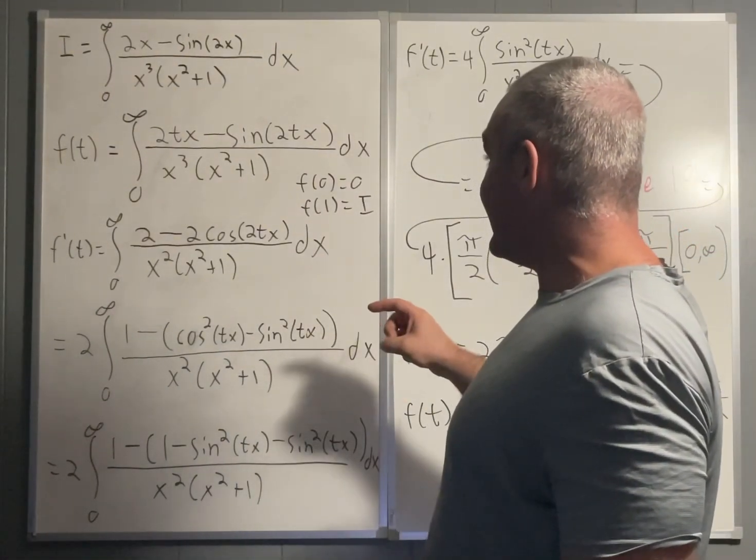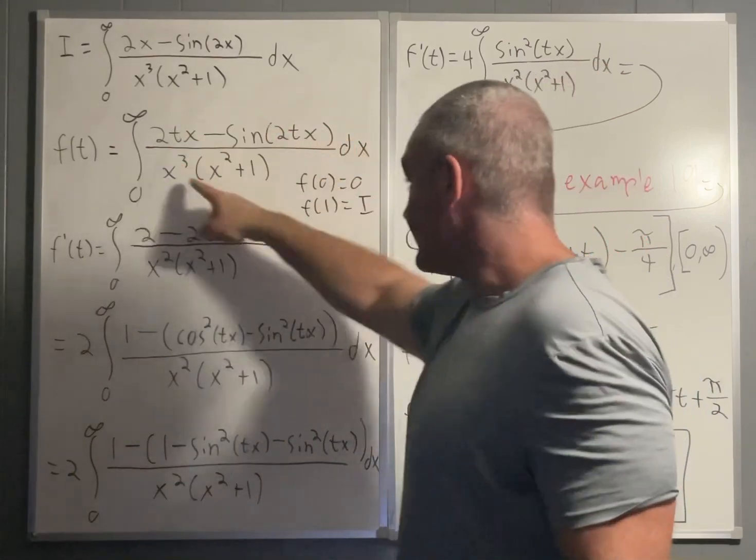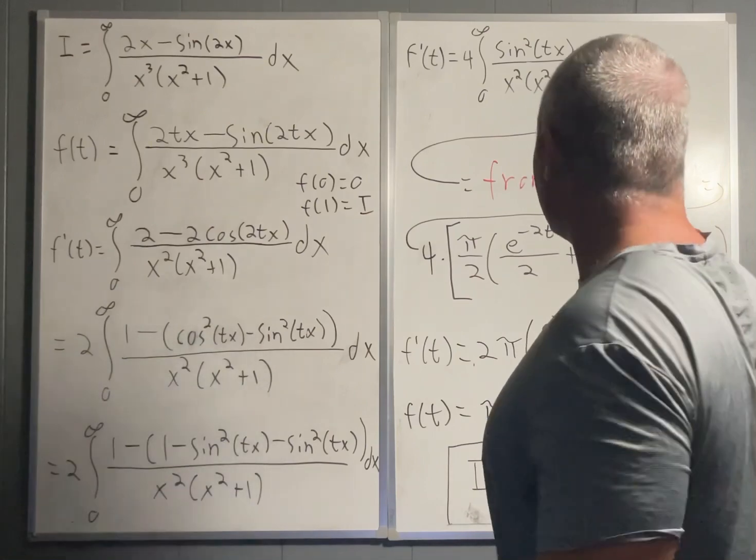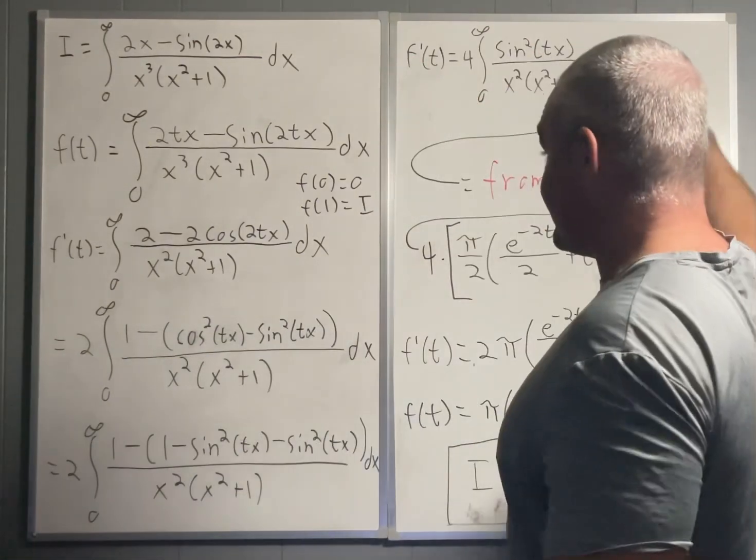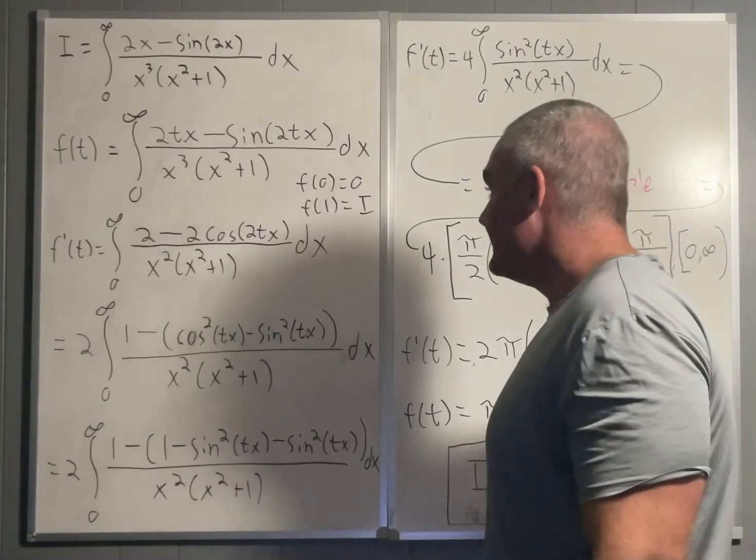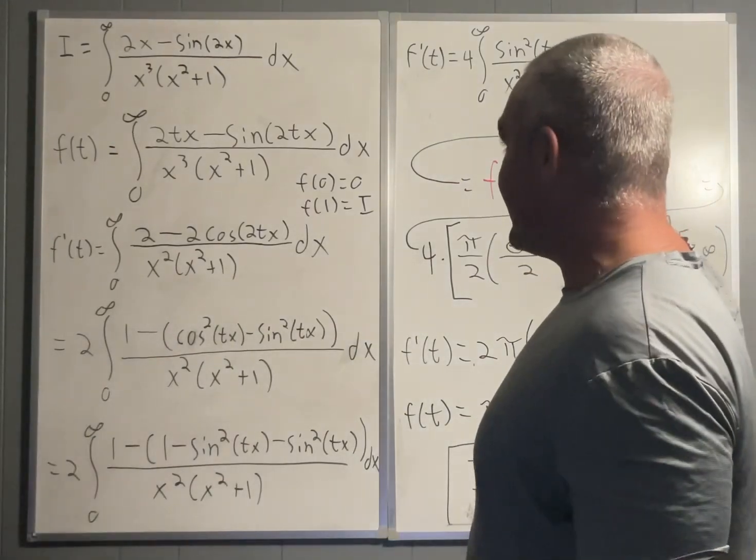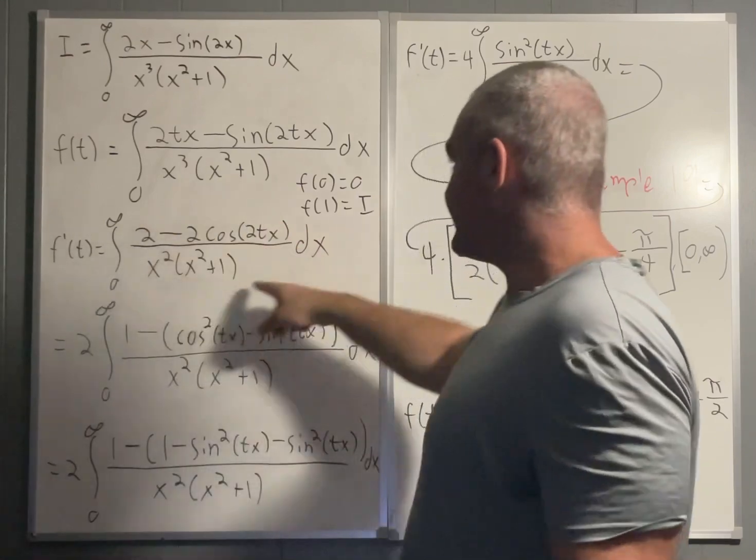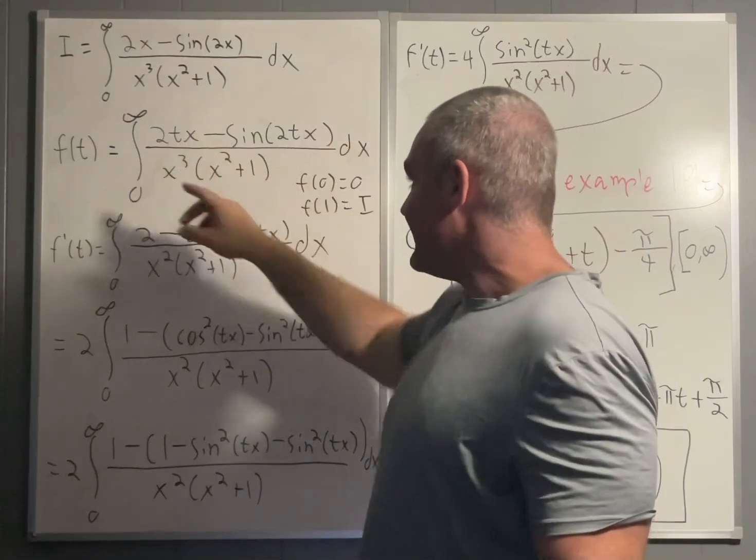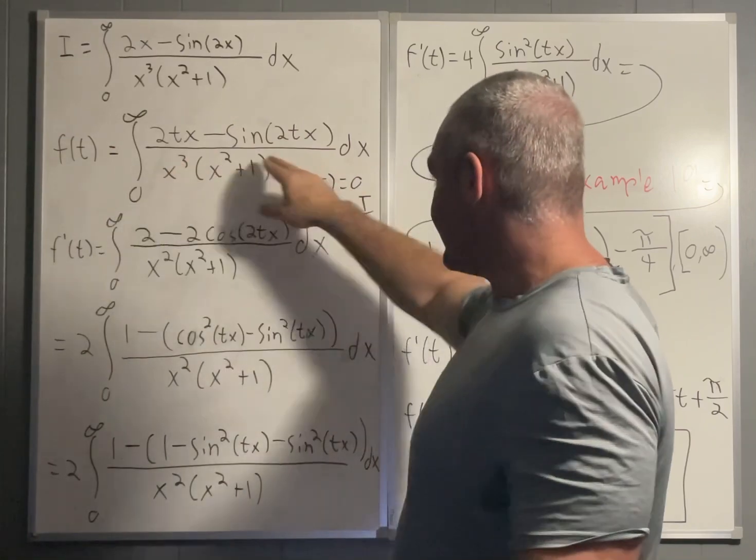So what you get if you take a partial with respect to t of this is, well, eventually you arrive at this. But I had some room on the board so I decided to actually do some of the steps. The first step, it's pretty clear. When you take a derivative with respect to t, this denominator is a constant. The derivative with respect to t of 2tx is simply 2x.